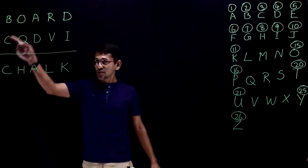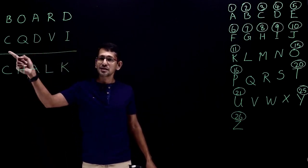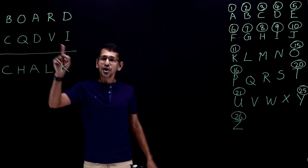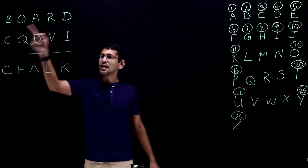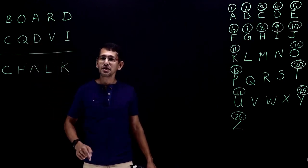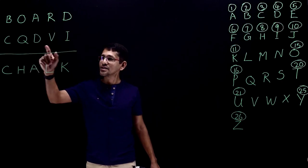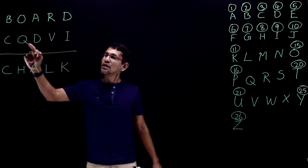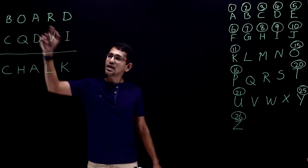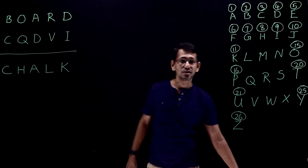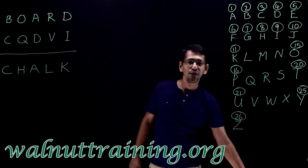If all the letters were present in the code, that would be a rearrangement of the letters. But in this case it is not a rearrangement — some of the letters in the code are not found in the word. So what is the best method for this?